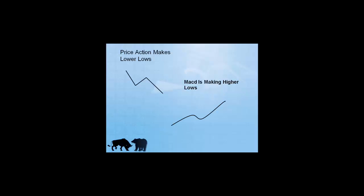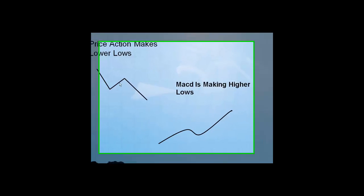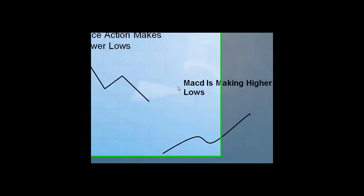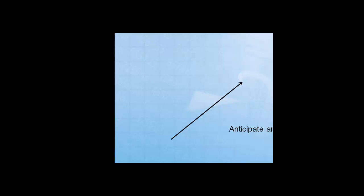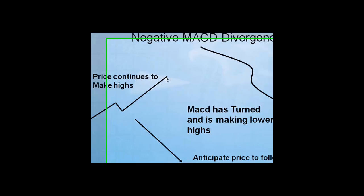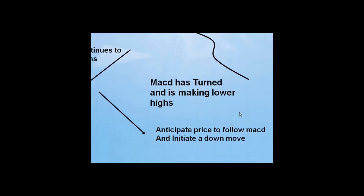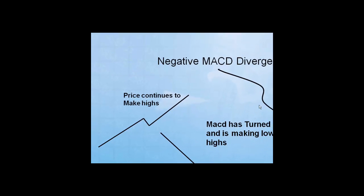Now, positive MACD divergence — and we're going to see it here on this slide. You see that the market is making lower lows, and MACD is making higher highs. This is a signal that the market wants to change direction. You're going to see that the market is going to follow MACD. You want to anticipate a price move up. Now, if you're seeing that the market is making higher highs but MACD is making lower lows, you want to anticipate the price to follow MACD and start falling. When there's a divergence, it always follows MACD.